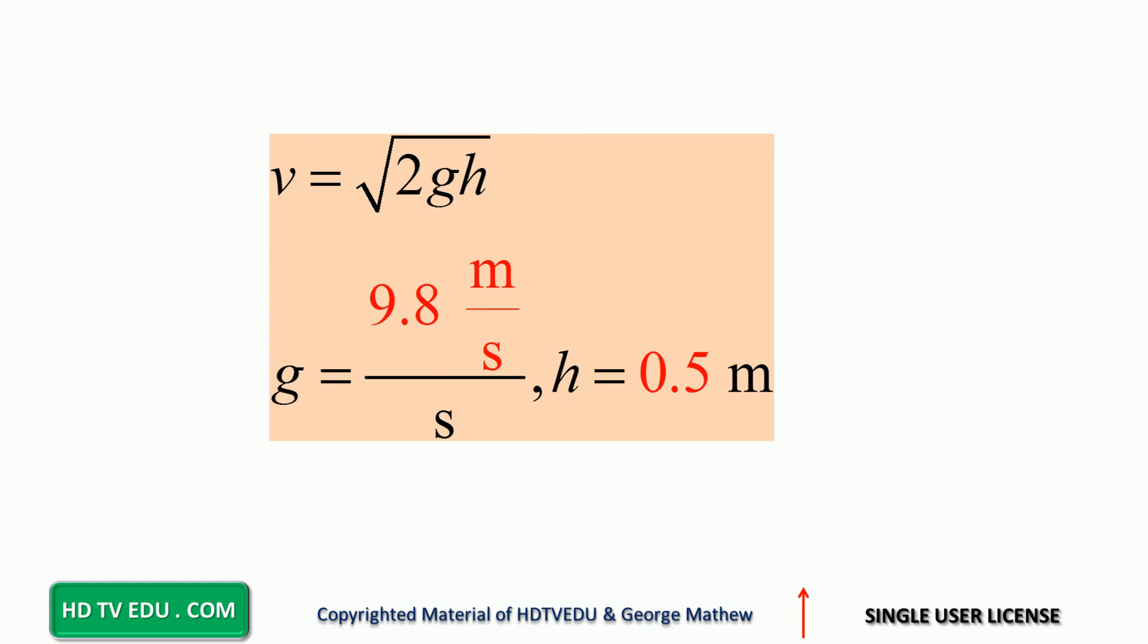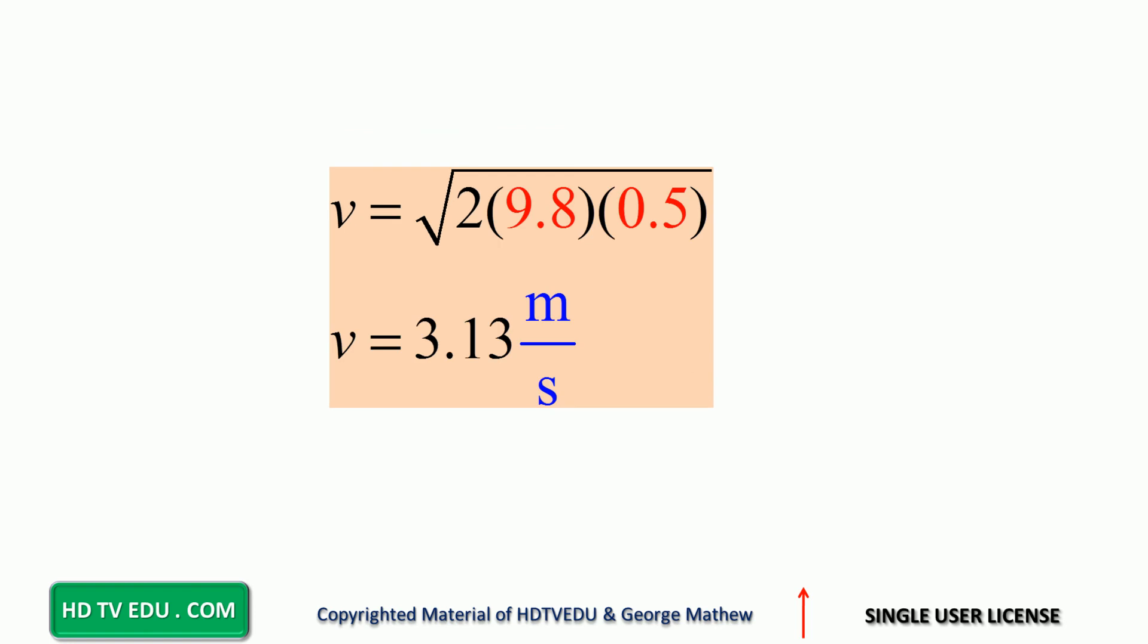Substitute G equal to 9.8. Substitute H equals 0.5. And what do we get? Speed is equal to 3.13 meters per second at the bottom. Isn't this nice? All we know is the height from which the object was released, and we are able to get the speed at the bottom.